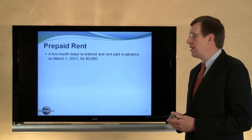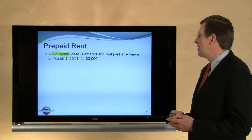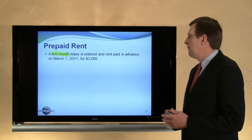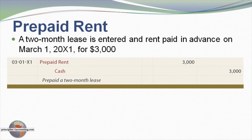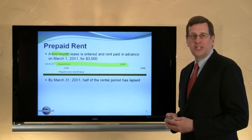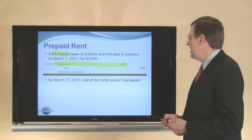Let's look at prepaid rent and start thinking about journal entries. In this case, we have a two-month lease entered into on March 1st, paying $3,000 for the two-month lease. At the inception of the lease on March 1st, we would debit an asset — prepaid rent — for $3,000.